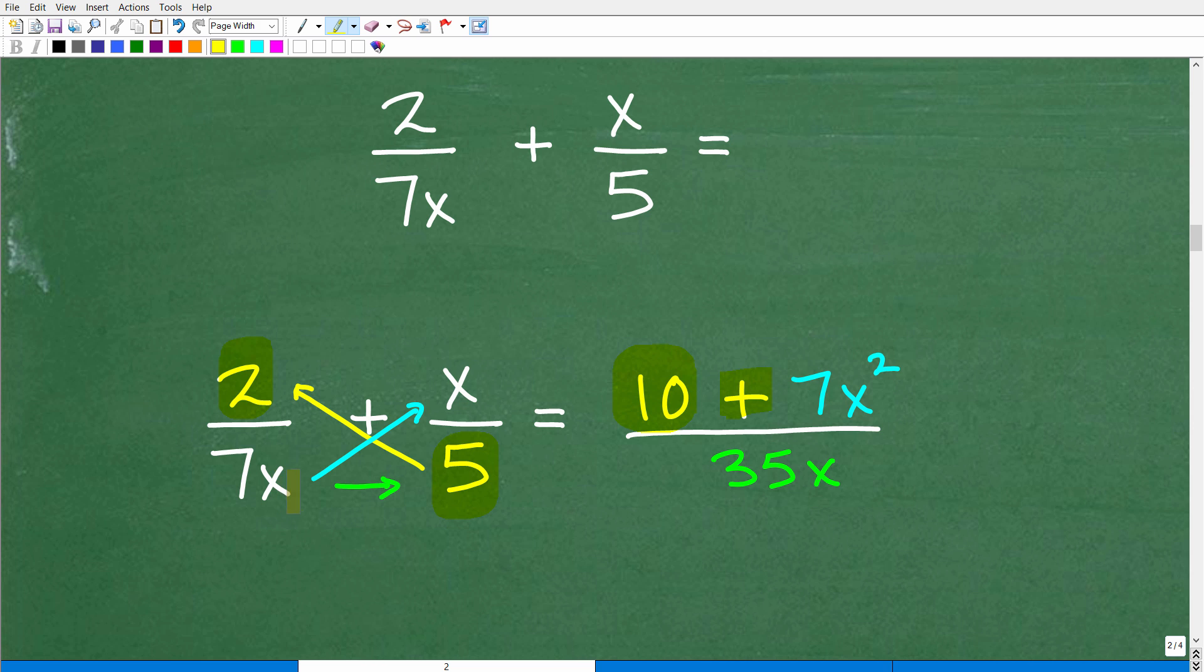And then step 2 is you're going to go to the bottom left denominator. So in this case, it's 7x. And you're going to multiply across this way. Okay, so 7x times x is, of course, 7x squared. And then to find the denominator, you're simply going to multiply across. So 7x times 5 is 35x. And we are done.